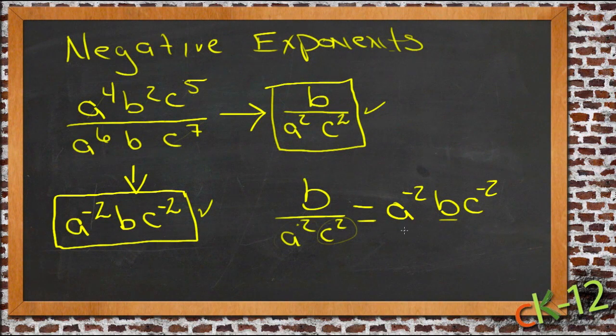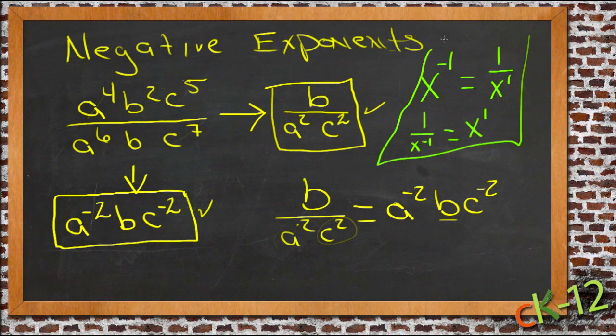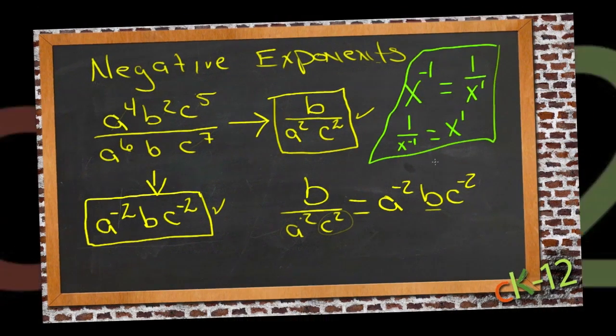And that rule is, if you have any number to some negative power, just say negative 1, that's the same as that same number to that same power, only positive, under the fraction bar. And it works the other way too. If I had 1 over x to the negative 1, that's the same as x to the positive 1 on top, which we don't usually bother to write - we just usually write the number. So these two examples here show us how the rules for dividing negative exponents work.